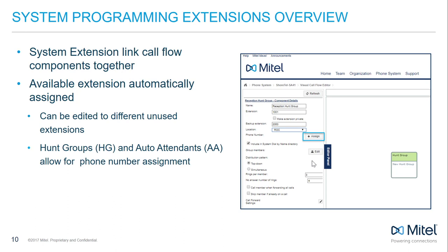Some components, such as Hunt Groups and Auto Attendance, allow for 10-digit programming numbers to be assigned so the component can be reached by an external caller. These are optional, whereas the system extensions are required when displayed in a Callflow Component.